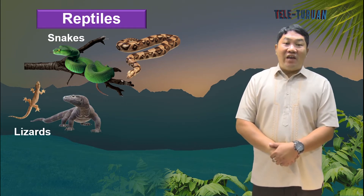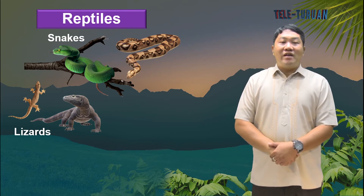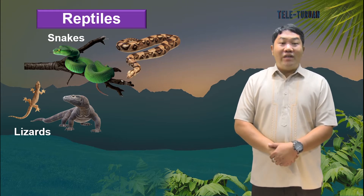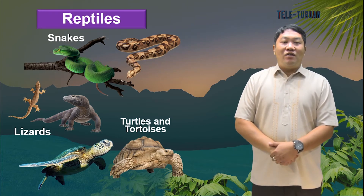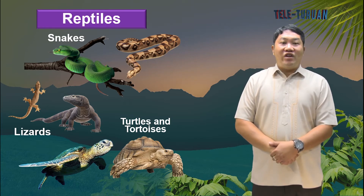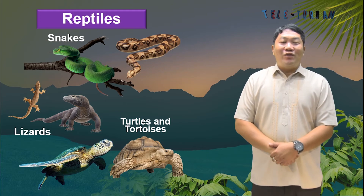Lizards have scales like snakes, but they have legs. They can climb trees and hold on to objects with their toes. The microscopic hair on their feet enables some of them to climb walls and walk on ceilings without falling. Turtles and tortoises are special reptiles because their soft body is covered with a shell made of bones. Their backbone and ribs are attached to the shell. Some turtles have long beaks that they use to capture food. They can also live to more than a hundred years.